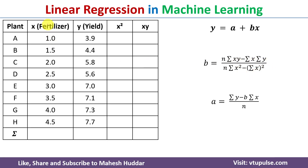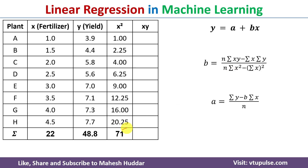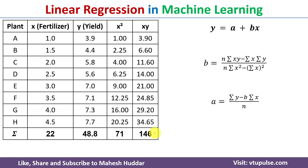First, we find that summation of x equals 22 and summation of y equals 48.8. To find summation of x squared, we calculate each x squared value and add them all, giving summation of x squared equals 71. Similarly, for summation of xy, we multiply each x by its corresponding y and sum all those values, giving summation of xy equals 146.